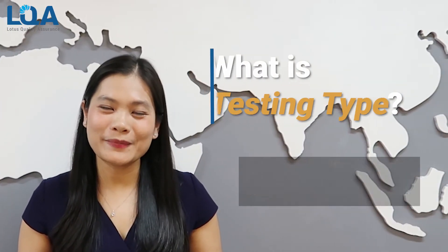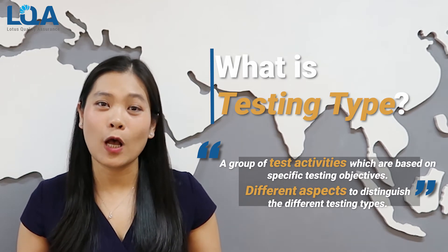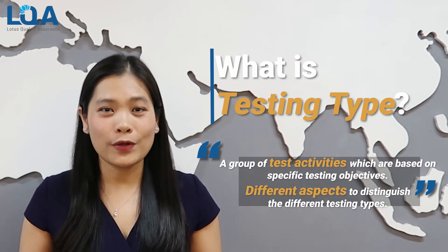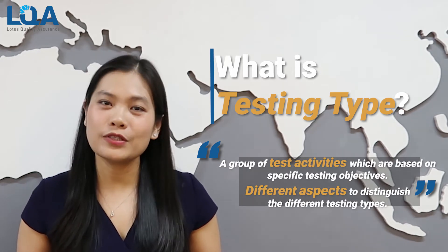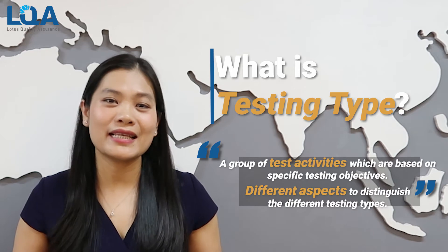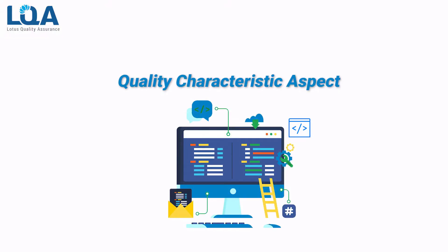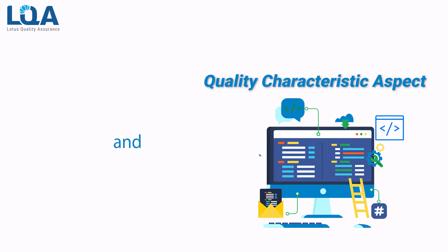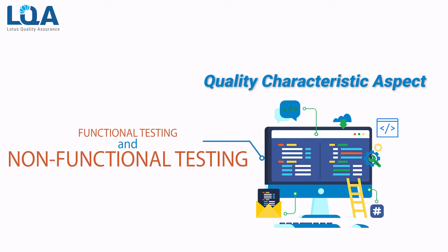A testing type is a group of test activities based on a specific testing objective. We can use different aspects to distinguish different testing types. For example, following the quality characteristic aspect, we could have functional testing and non-functional testing.